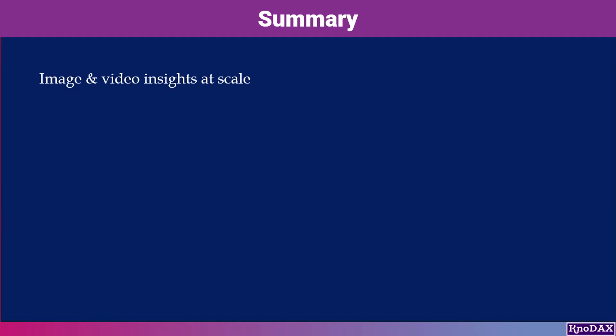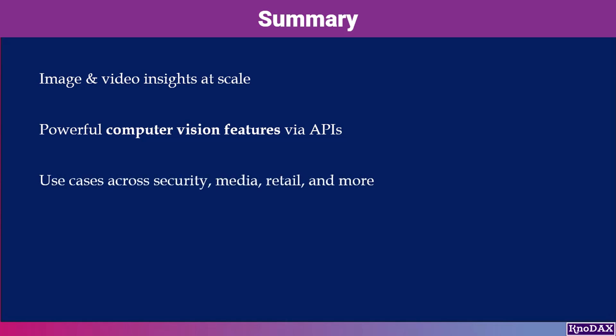In summary, Amazon Recognition delivers image and video insights at scale, quickly, securely, and cost-effectively. It brings computer vision within reach, offering facial recognition, object detection, text extraction, and content moderation capabilities. Across industries such as security, media, and retail, Recognition helps organizations unlock valuable insights from images and videos.